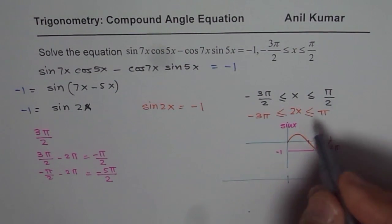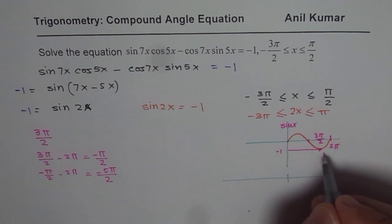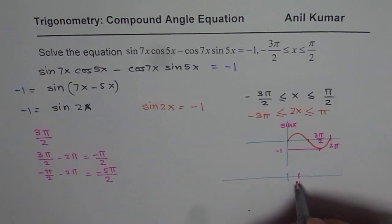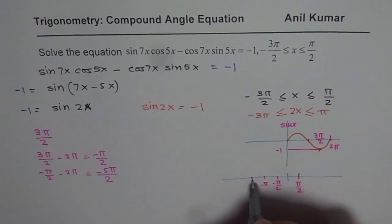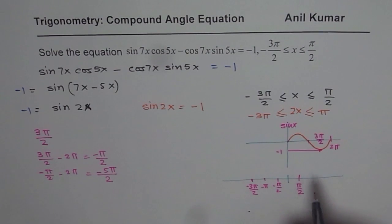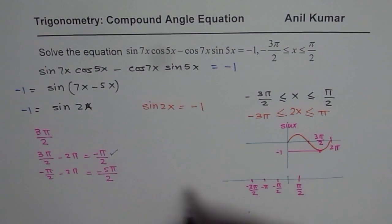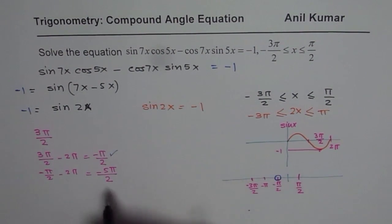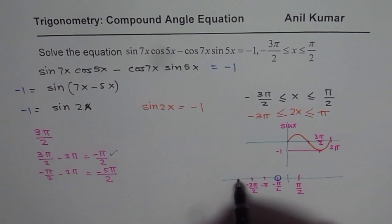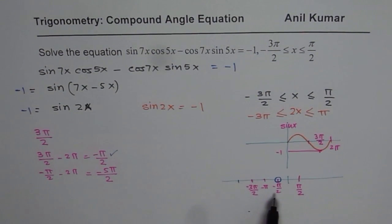On the domain, the domain here is, we have pi by 2 here on the plus side and then on the minus side, we have minus 1 pi by 2. Minus 2 pi by 2 will mean minus pi, then minus 3 pi by 2. That is the domain for us. Within this domain, we have one answer, minus pi by 2. And the other one, minus 5 pi by 2 will be beyond this. There is only one solution which we get within this domain.